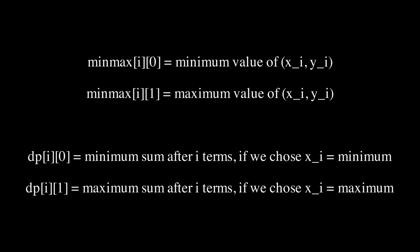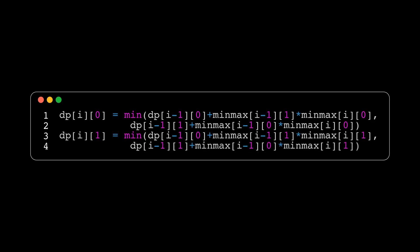Then we have the recurrence relation that will be shown in the video. This means that dpi0 is either the minimum sum if you had chosen the previous term to be minimum, so xi minus 1 is minimum, meaning that we have to multiply the yi minus 1 term, which is the maximum of the previous position, to this current term we have, the xi, which is the minimum because it's dpi0, or vice versa. So if you had chosen the previous term to be maximum, then you have to multiply the minimum of the previous to the minimum of this current term. And dpi1 is the same except the current position will be the maximum, not the minimum.